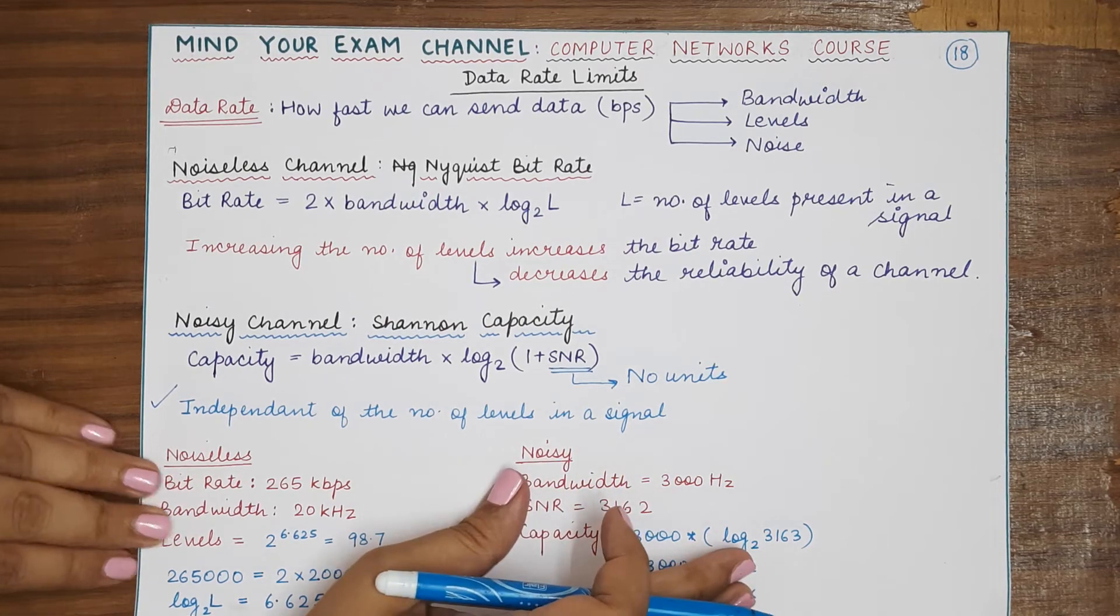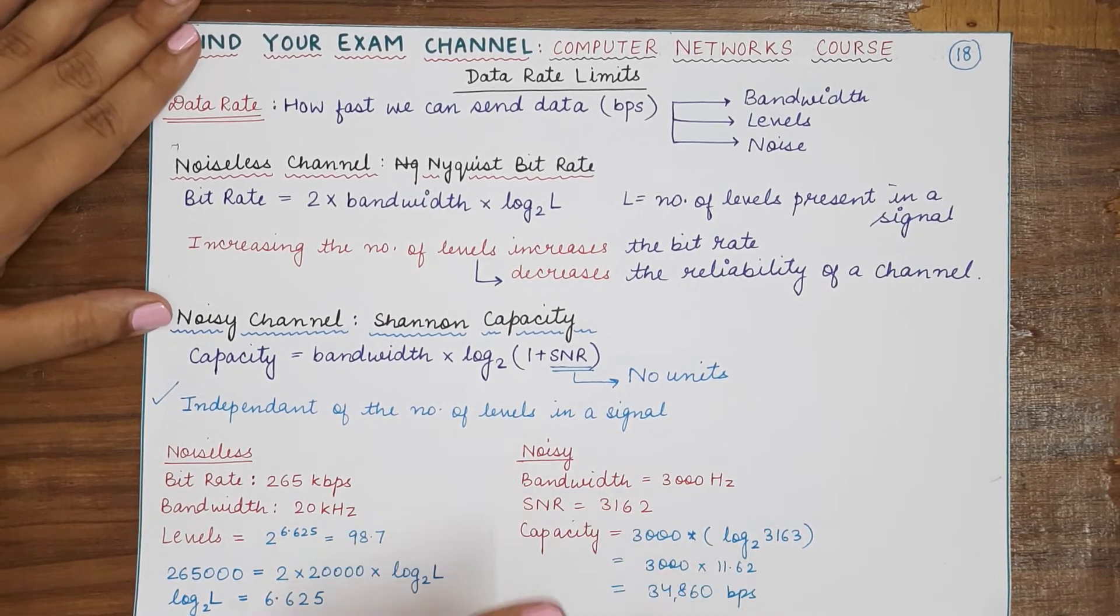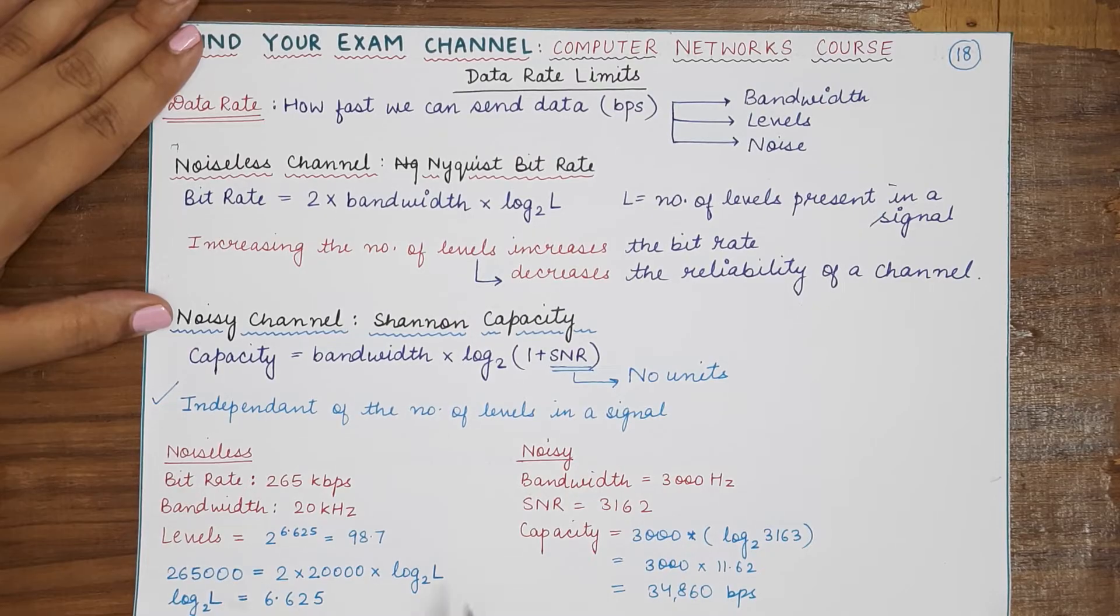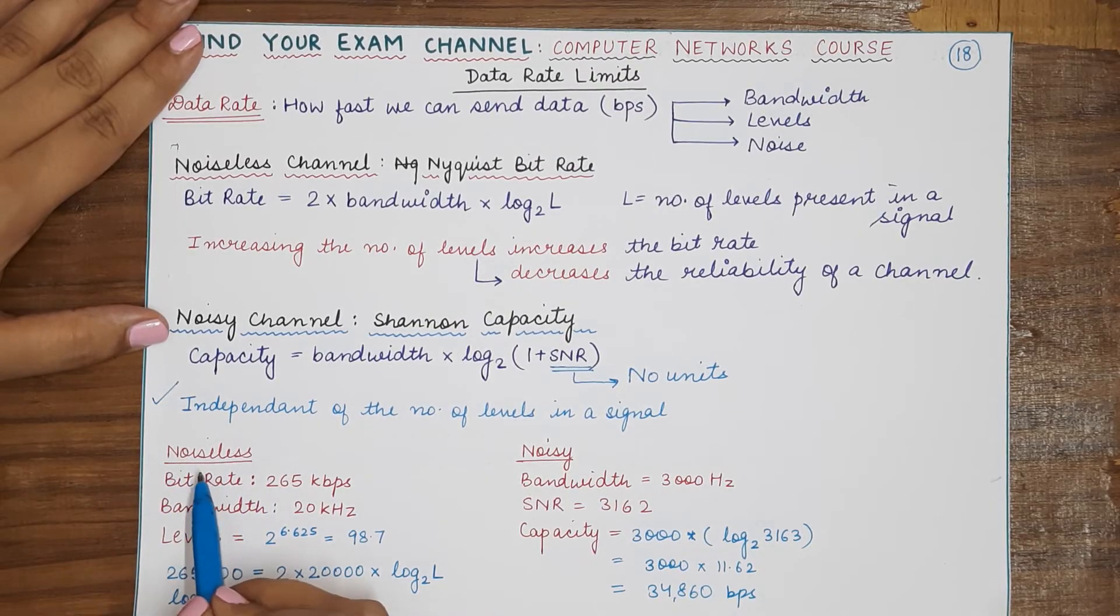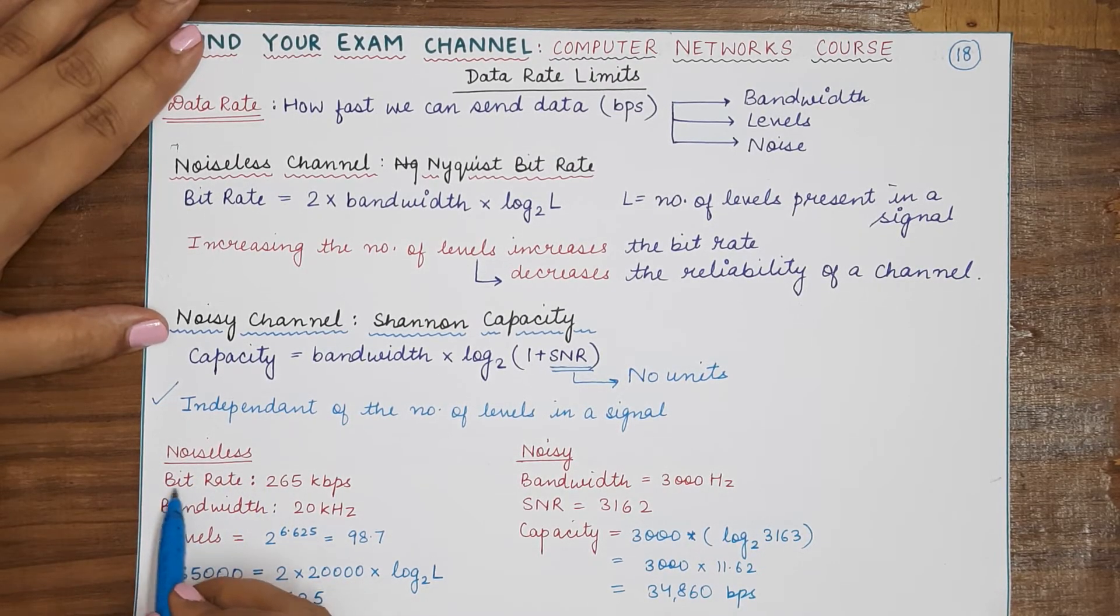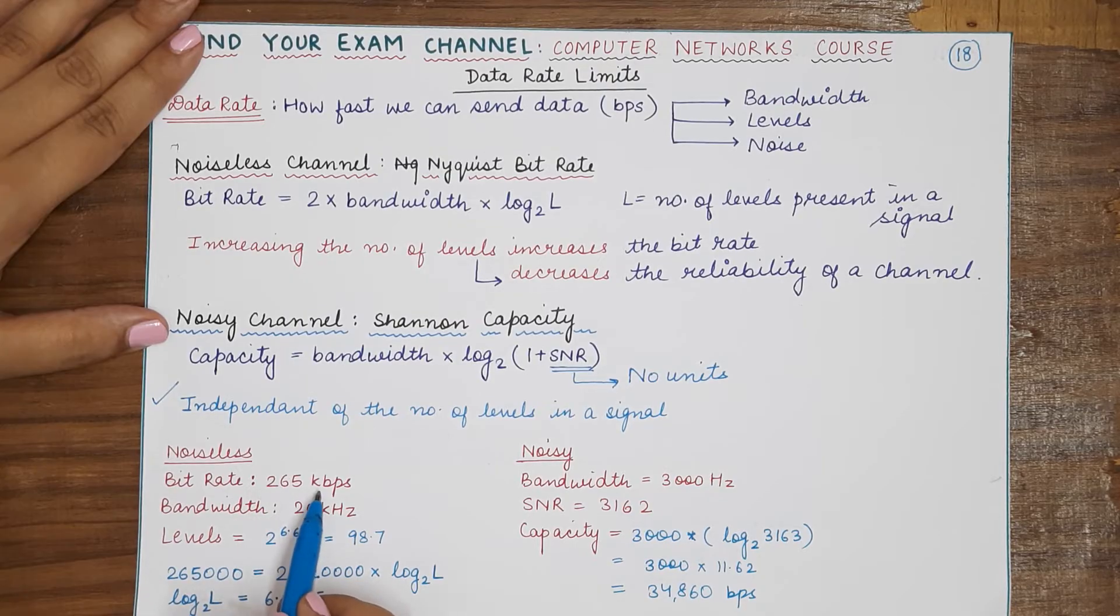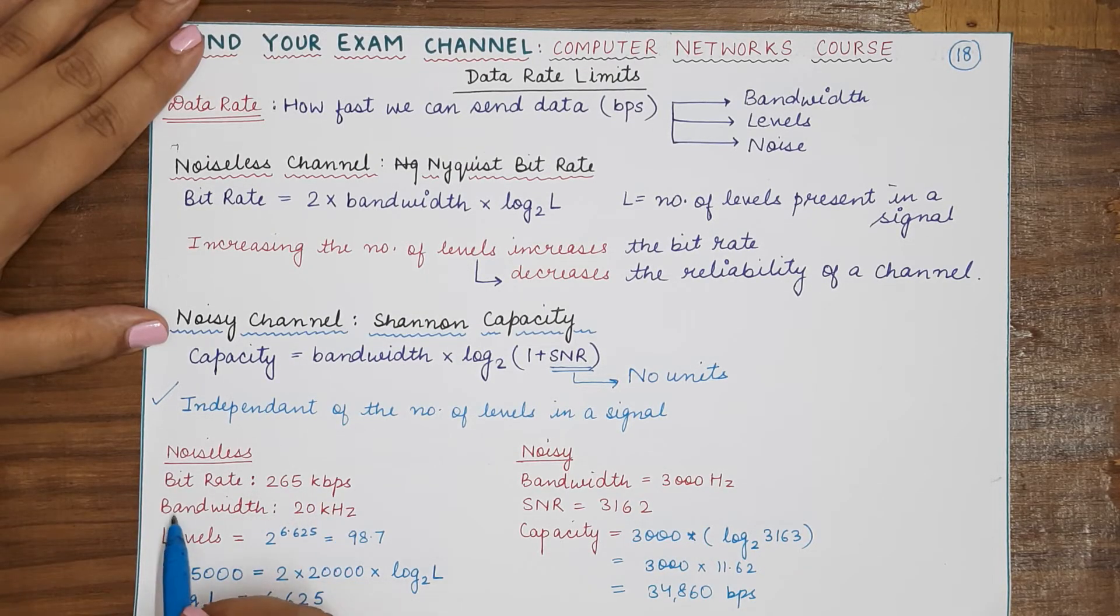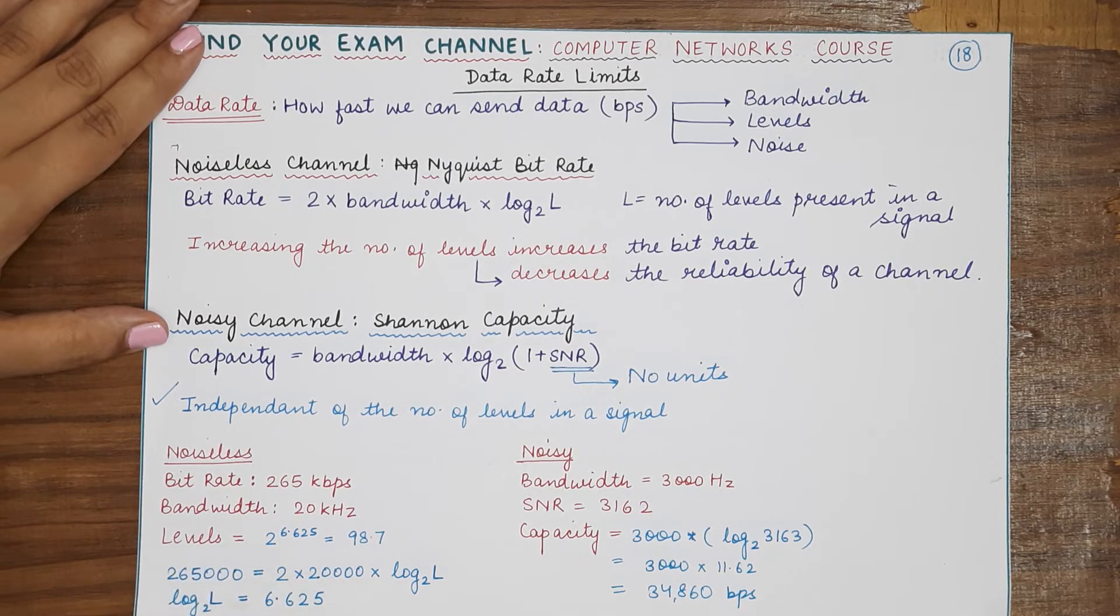Now let's do two quick questions on each of these formulas. First for the noiseless channel: if we have a bit rate of 265 kbps and a bandwidth of 20 kilohertz, then if you have to calculate the number of levels you will be applying this formula.